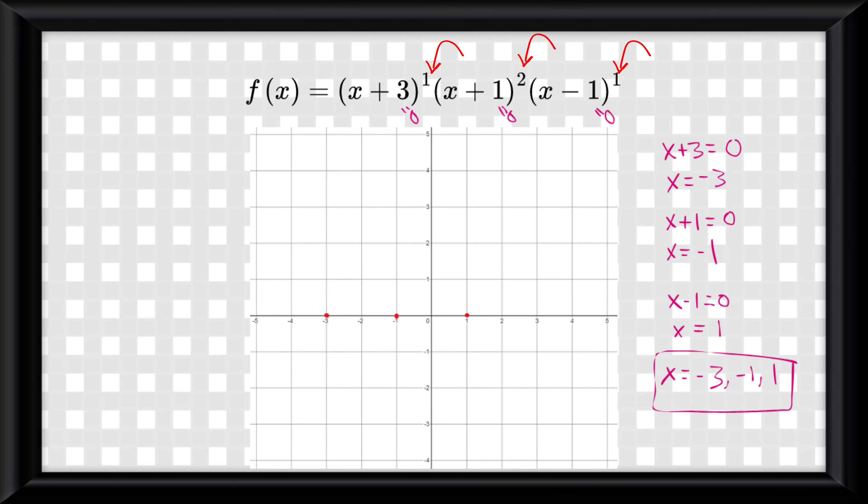Now we look at the exponent next to the parentheses. If the exponent is odd, then that zero is said to have odd multiplicity, and therefore the line on the graph would pass through it. If the exponent is even, the zero is said to have even multiplicity, and therefore the line will bounce off of the zero instead of going directly through it.